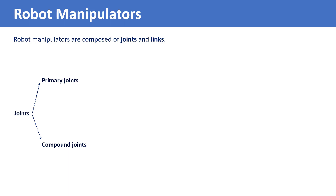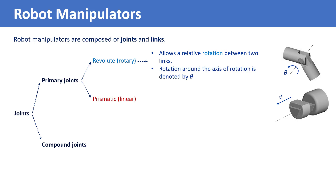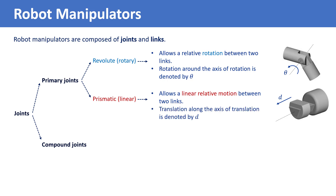Primary joints provide one degree of freedom. The two types of primary joints are revolute or rotary joints and prismatic or linear joints. A revolute joint allows a relative rotation between two links, and the rotation is around the axis of rotation, denoted by an angle. A prismatic joint allows a linear relative motion between two links, and the translation along the axis of translation is denoted by d.